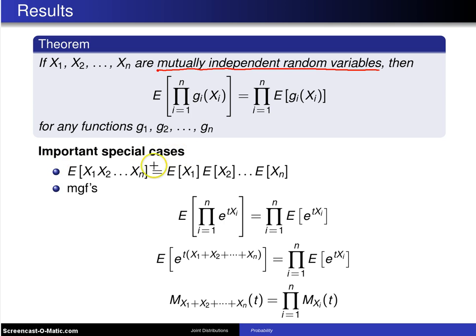Two important special cases. First, when these g_i(X_i) functions are just X_i, then the expected value of the product of n random variables is the product of their expected values, assuming they are mutually independent random variables.